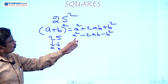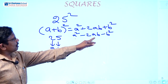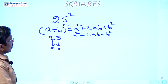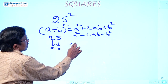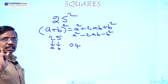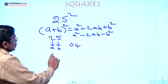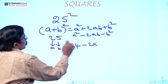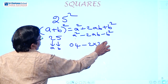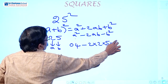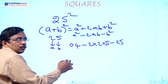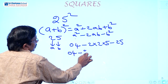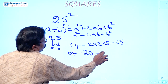We are taking the terms A square, 2AB, B square, considering 2 as A and 5 as B. So A square means 2 squared equals 04. Important: always write two digits, so write 04, not just 4. Then 2AB means 2 into 2 into 5 equals 20. And B square means 5 times 5 equals 25.